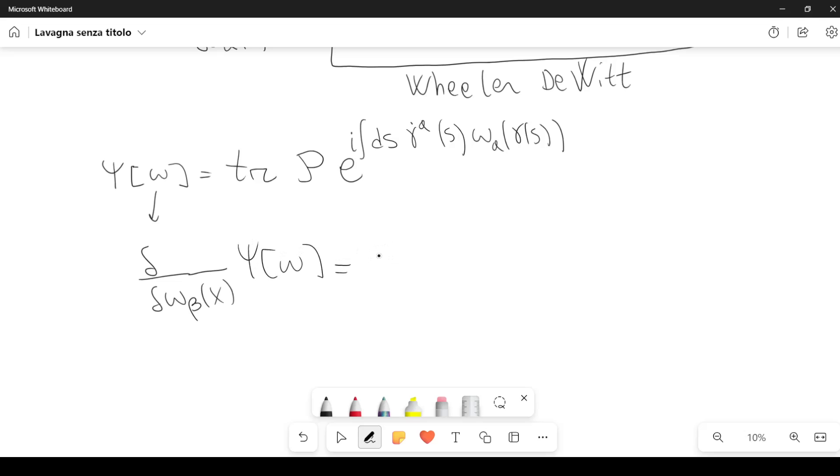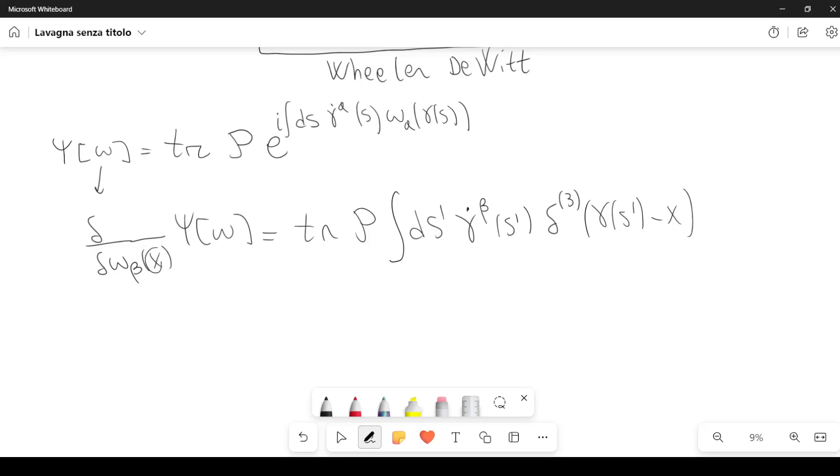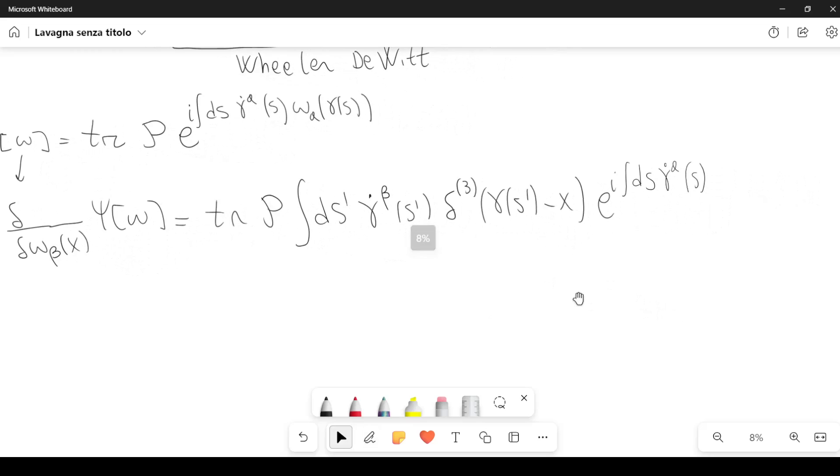this is equal to, we get something like this. We have the trace, then we have path ordering, then we have an integral over ds prime, gamma dot beta of s prime. We also have a three-dimensional Dirac delta, gamma of s prime minus x, because here in the functional derivative we have x.